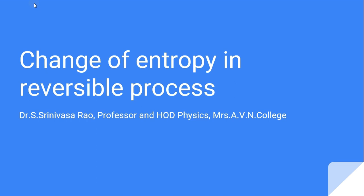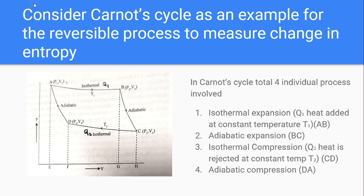To find how the entropy is going to change in a reversible process, we are going to take a Carnot cycle as an example. For the benefit of Telugu medium students I will repeat in Telugu also. Carnot cycle is one of the best examples for the reversible process. The Carnot cycle consists of four different individual processes: isothermal expansion, adiabatic expansion, isothermal compression, and adiabatic compression.